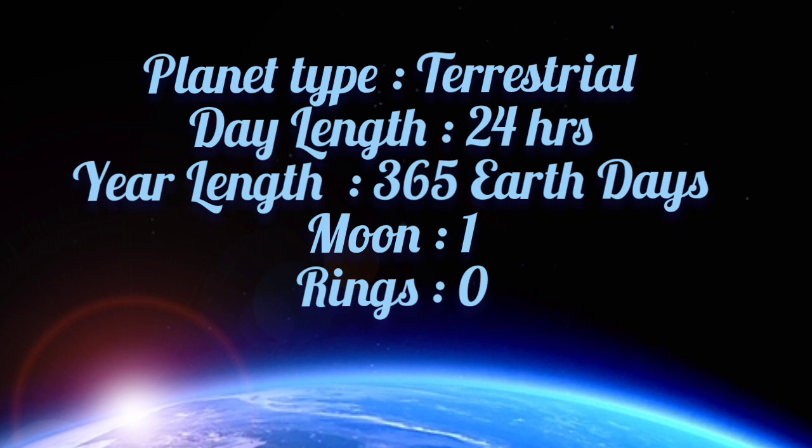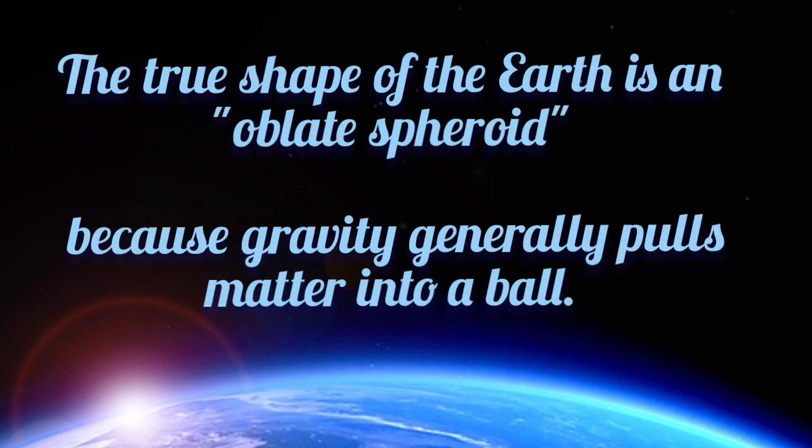Earth has one moon and zero rings. The true shape of the Earth is an oblate spheroid because gravity generally pulls matter into a ball.